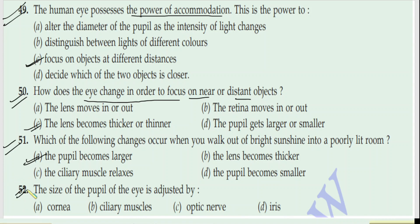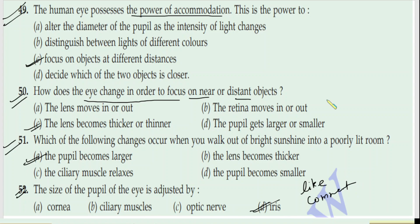Question 52: The size of the pupil of the eye is adjusted by the iris — we have already discussed that the iris adjusts it. If you liked the video, don't forget to like and subscribe to our channel. You can tell your problems in the comments. Bye bye everyone!